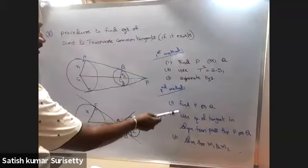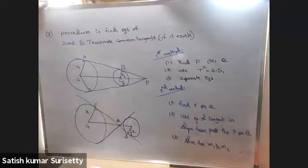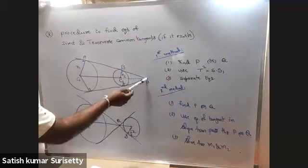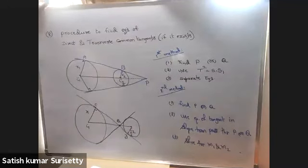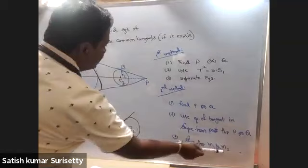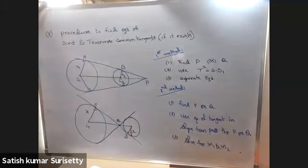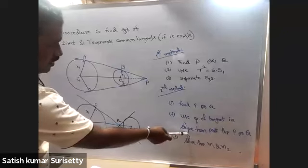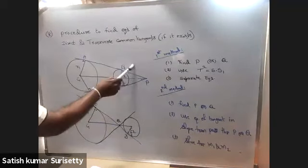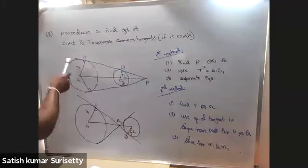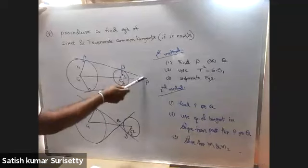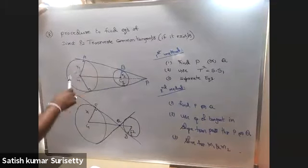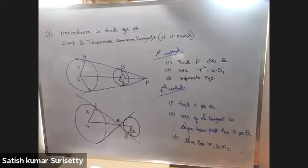If you don't remember the tangent slope form, take M as the slope, write the equation of the line through the point with slope M, then apply the condition of tangency: perpendicular distance from the center to the line equals the radius (using one of the circles). Solve for M and then calculate the equations of the tangent.